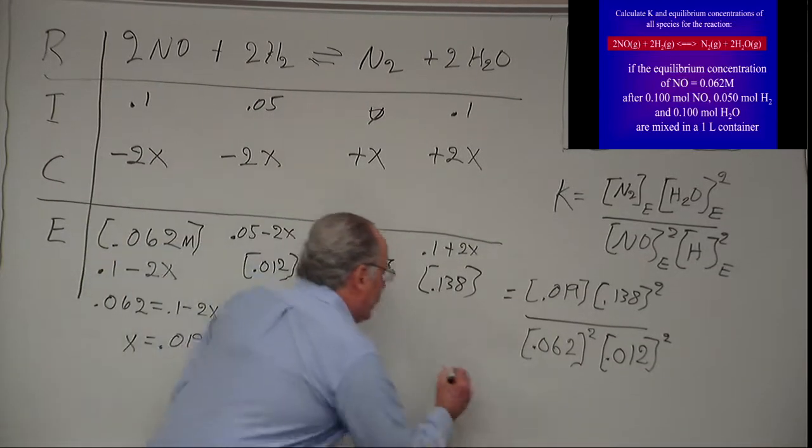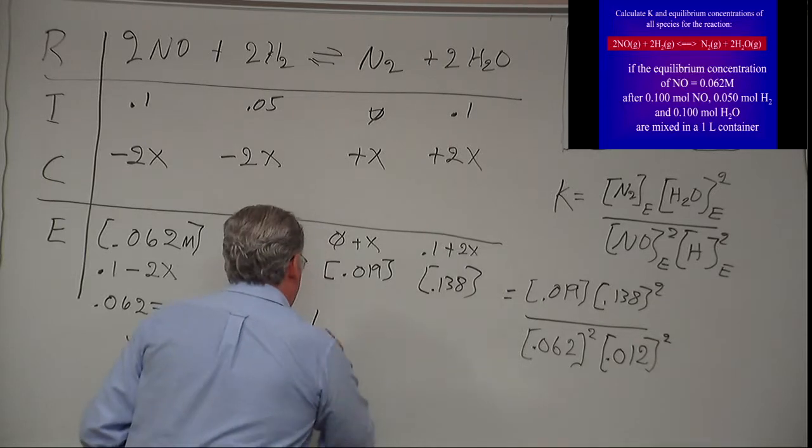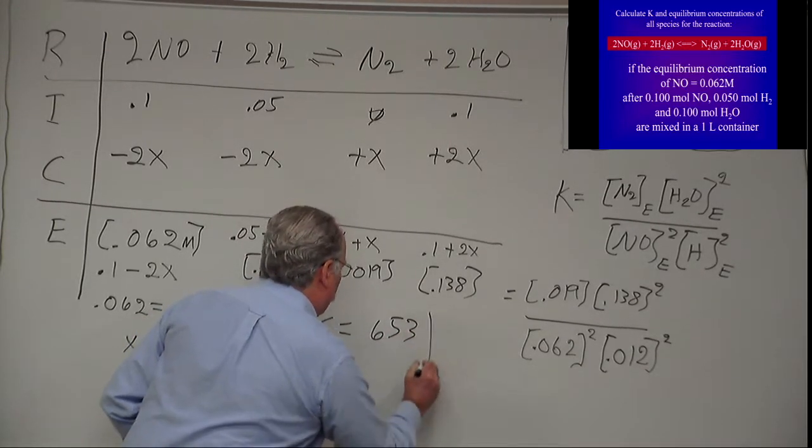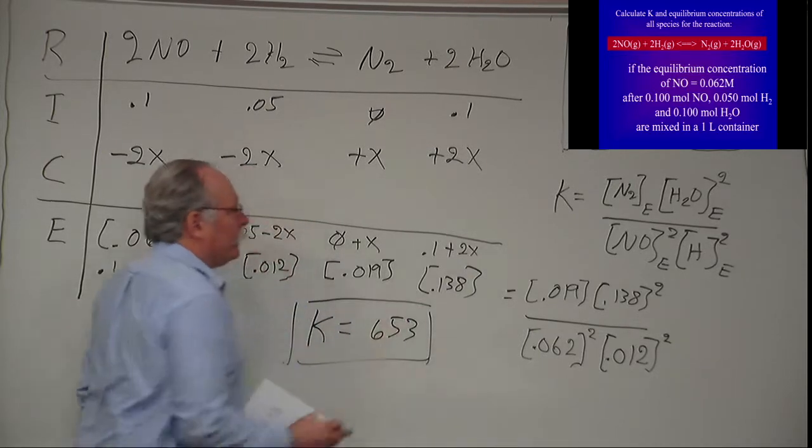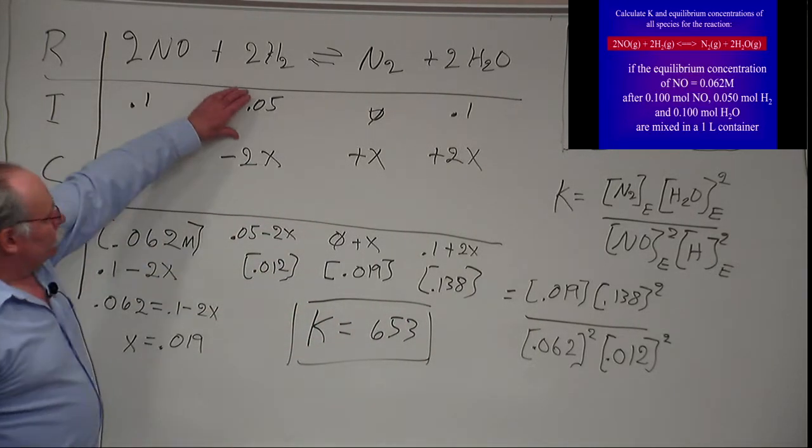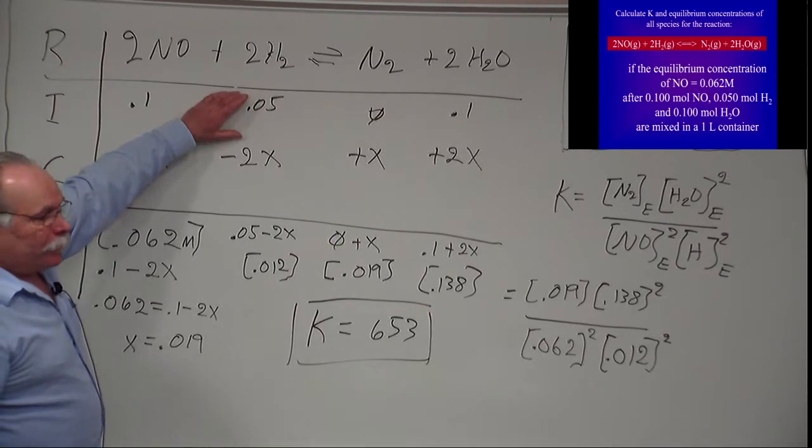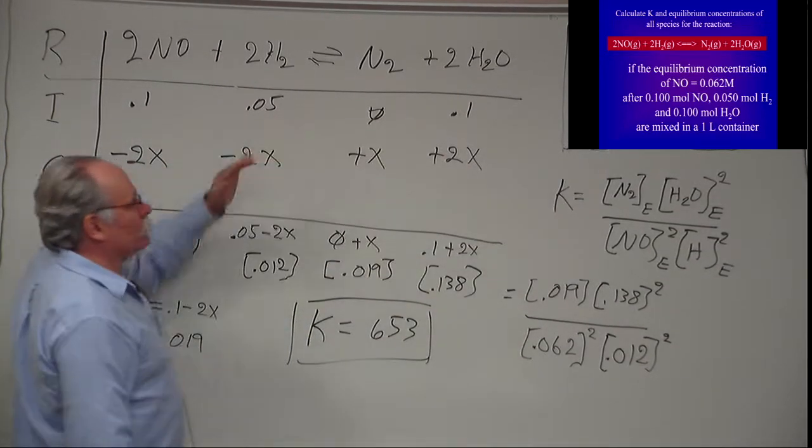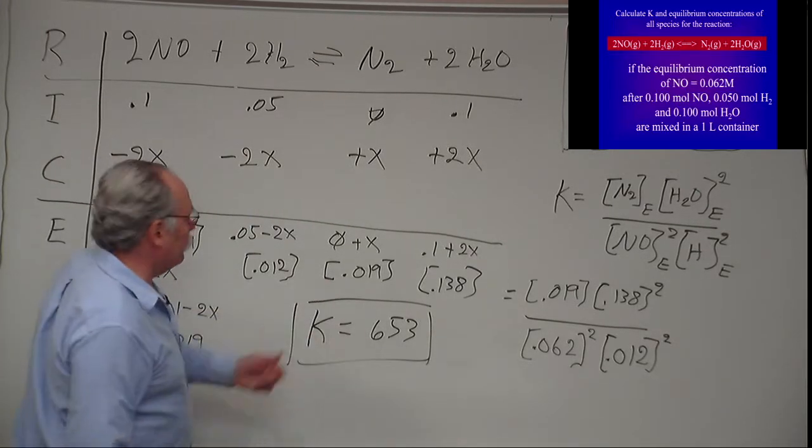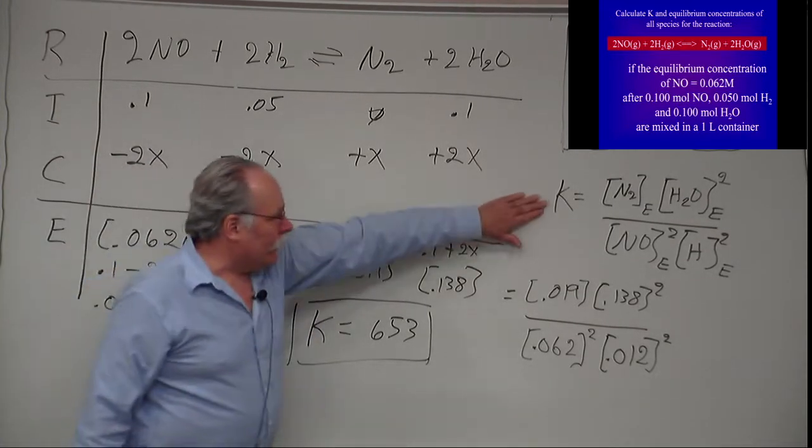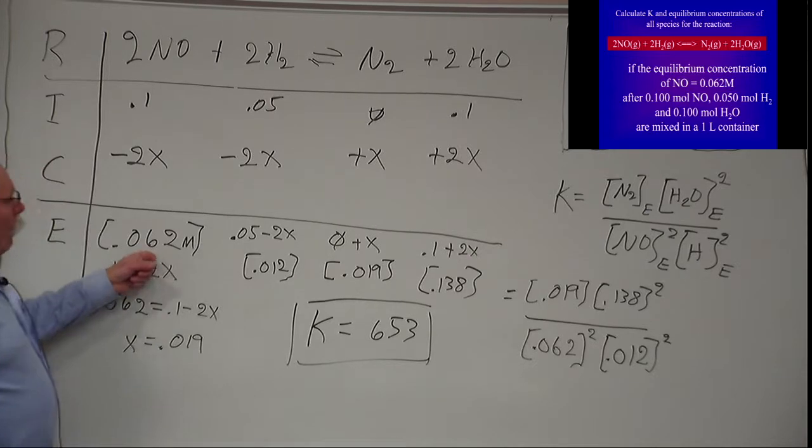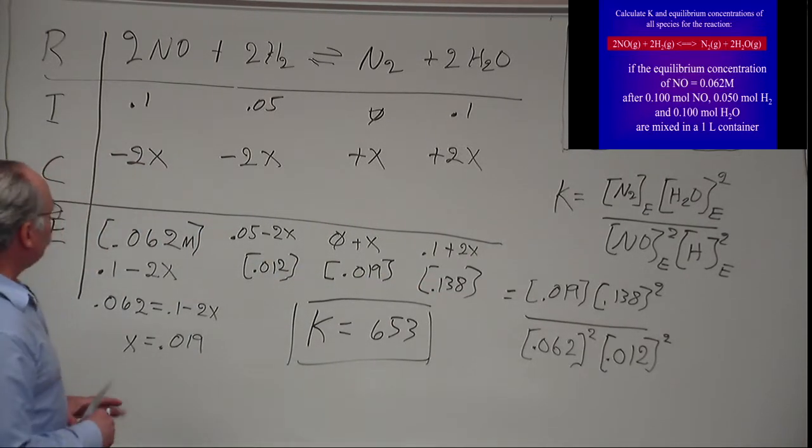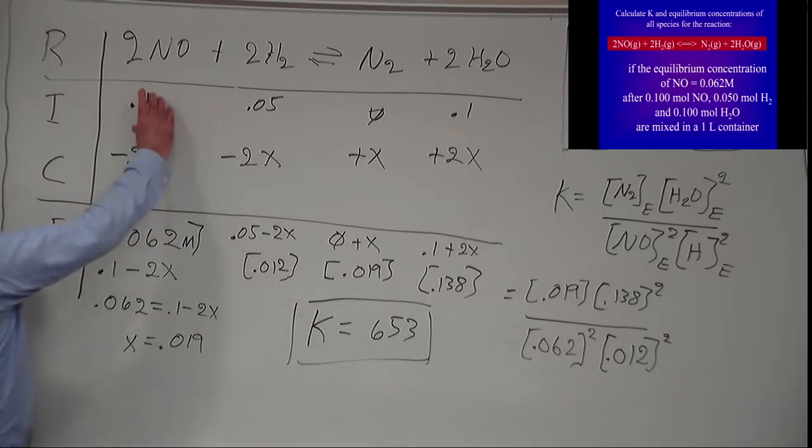So in summary, you're given initial concentrations. If Q equals K nothing happens. If Q is not equal to K something happens. If you want to calculate K you need to know one of the equilibrium concentrations.